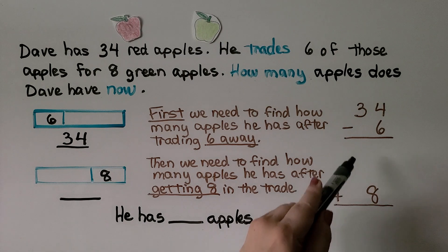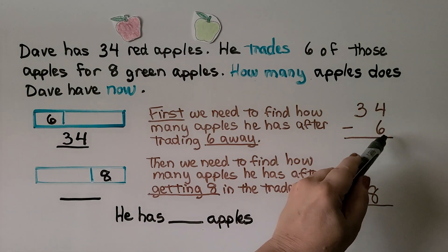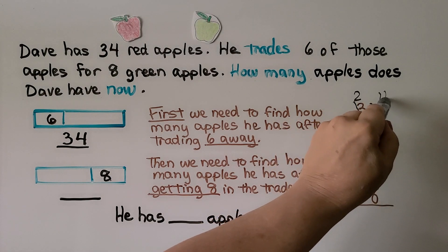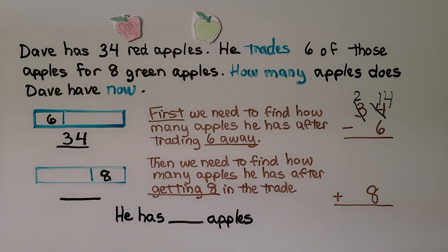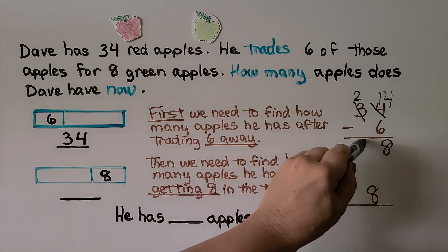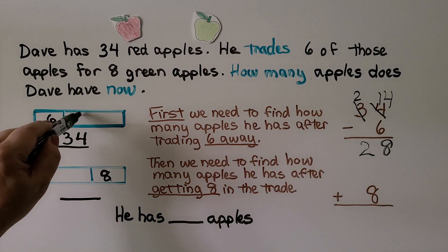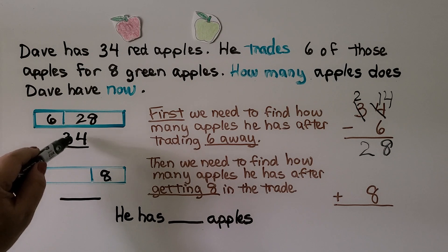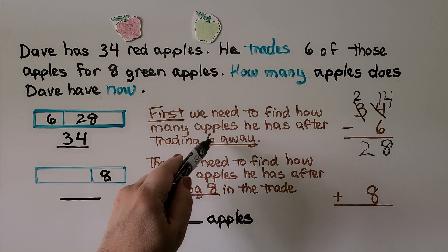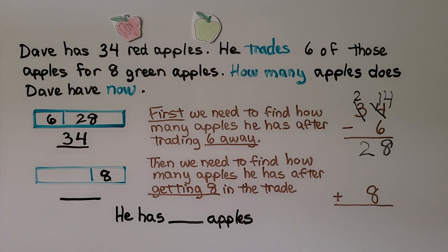We have 34. There's a 4 in the ones place and we don't have enough ones to take away 6, so we regroup from the tens place — make that 2 tens — and that makes 14 ones. 14 minus 6 is 8. We have 2 tens and we're not taking any tens away, so we bring the 2 down. That's 28. So 6 plus 28 equals 34 — we found how many apples he has after trading away the 6.